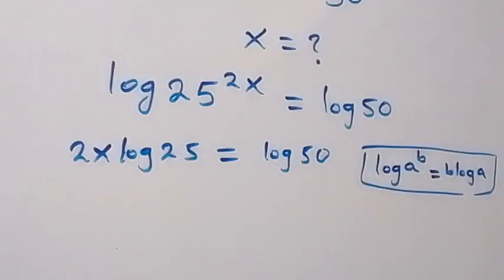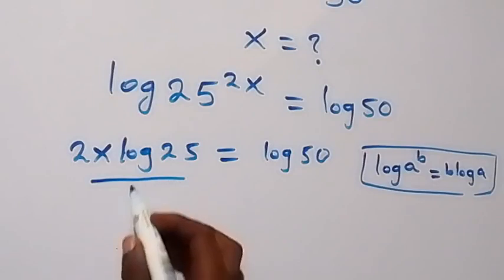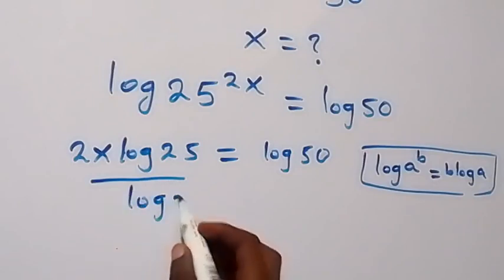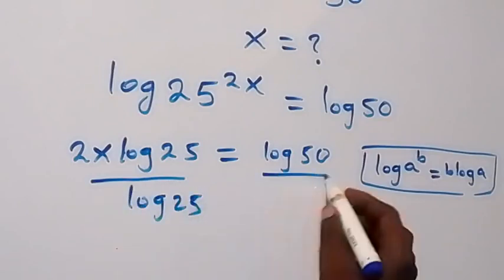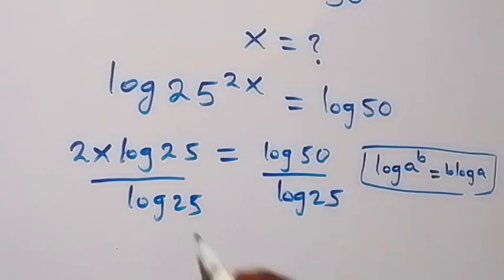Let's divide both sides by log 25. So we divide this side by log 25 and also divide this side by log 25. From here, log 25 cancels with log 25.